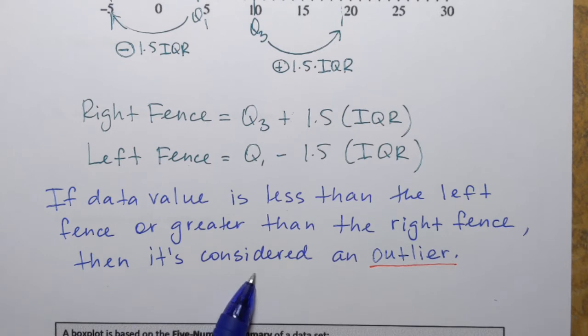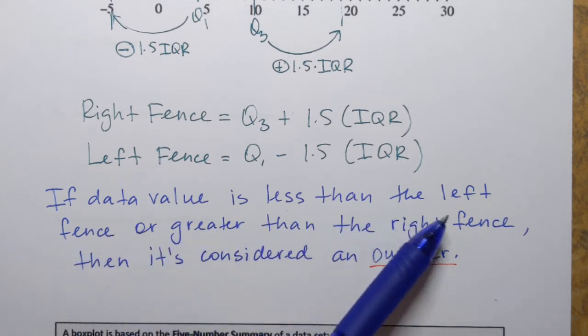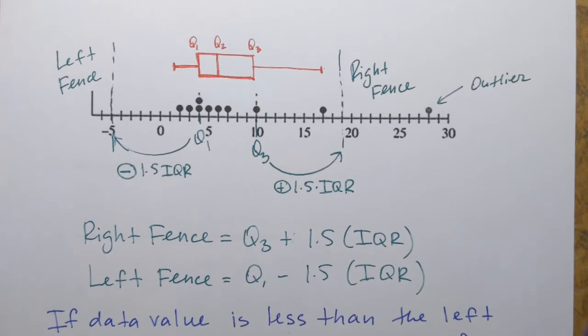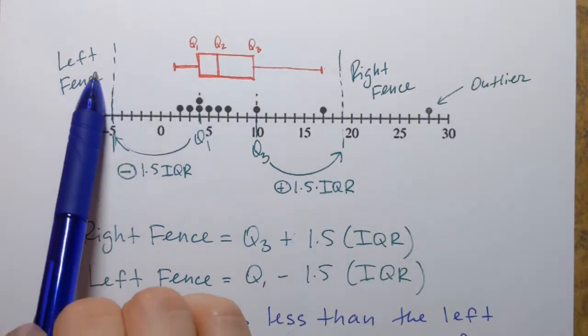And here's the definition that I promised. If data value is less than the left fence or greater than the right fence, then it's considered an outlier. So once again, anything that falls outside of those fences are going to be outliers.